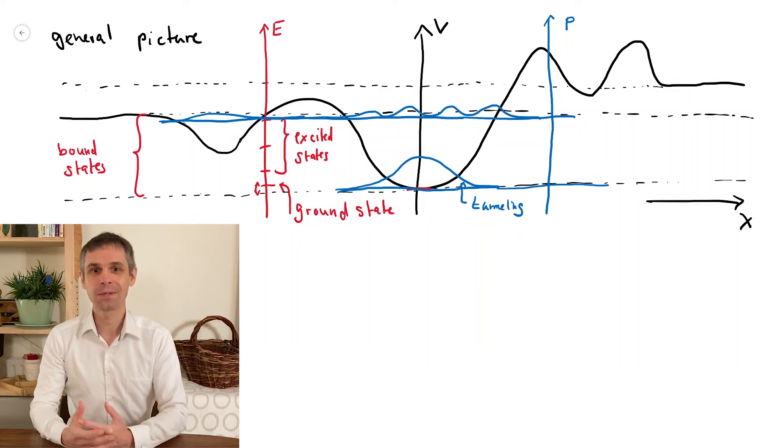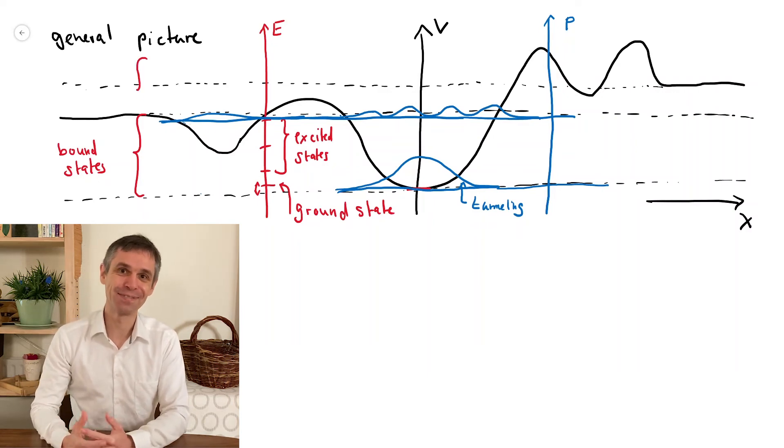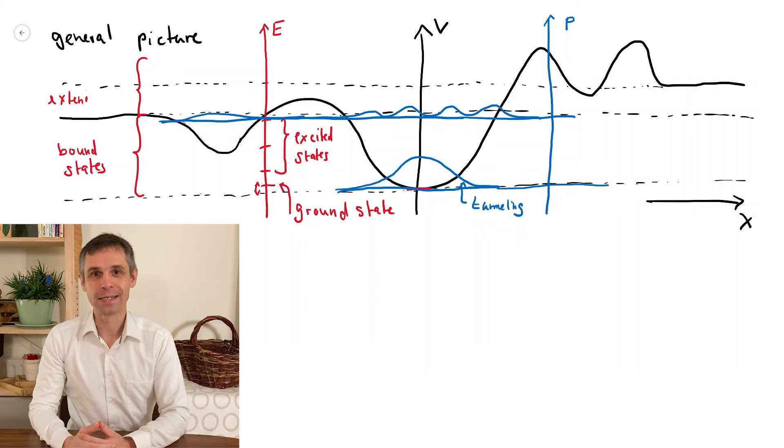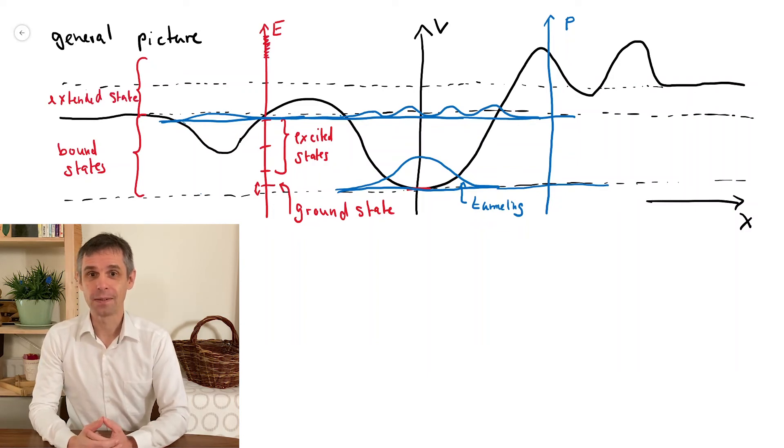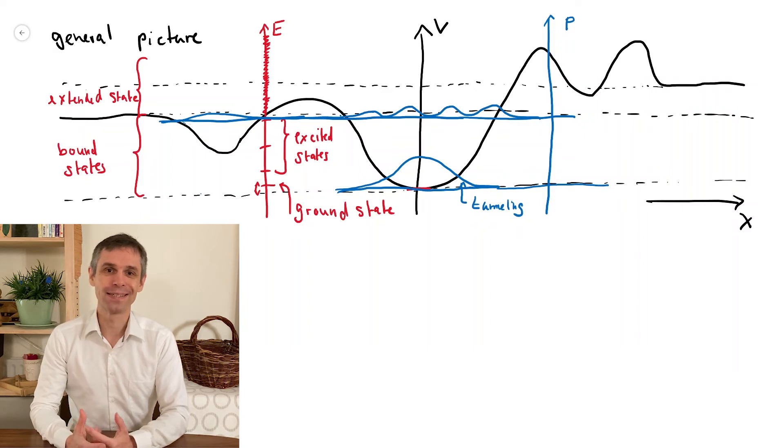Now even further above this, we have the energies where the particle can escape to infinity. We call the states that we find there the extended states, and they exist at all these energies so that energy quantization does not occur.